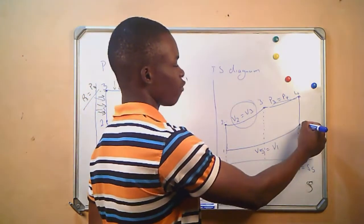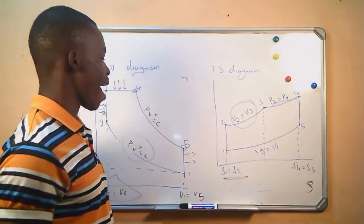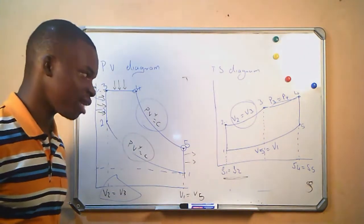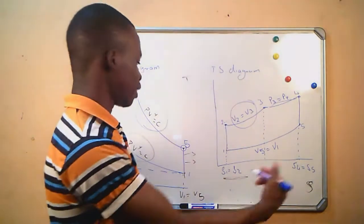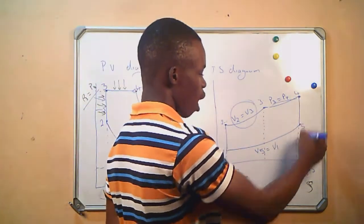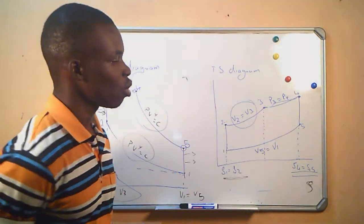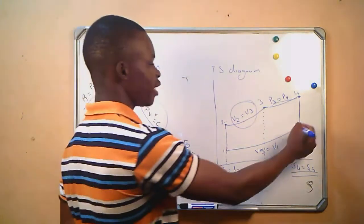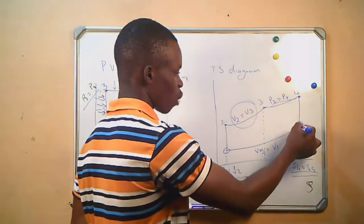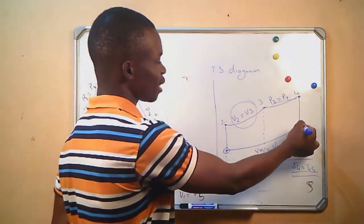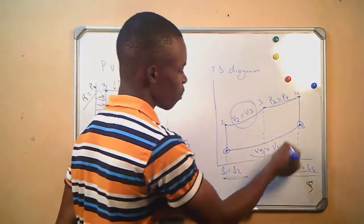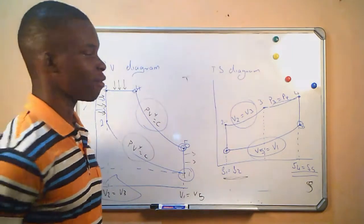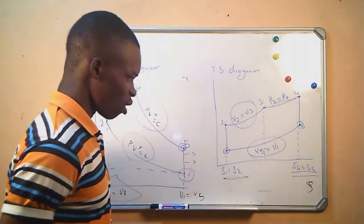And then from 4 to 5, this is our expansion, which takes place using the law PV raised to gamma equals to C, which is the adiabatic law. Still, under adiabatic, there is no heat exchange. Therefore, S4 is equal to S5. From 5 to 1, heat is rejected from the system. That is why we get our entropy decreasing from 5 to 1, and this happens at constant volume where we have our V1 being equal to V5. And that is the TS diagram of the Joule cycle.